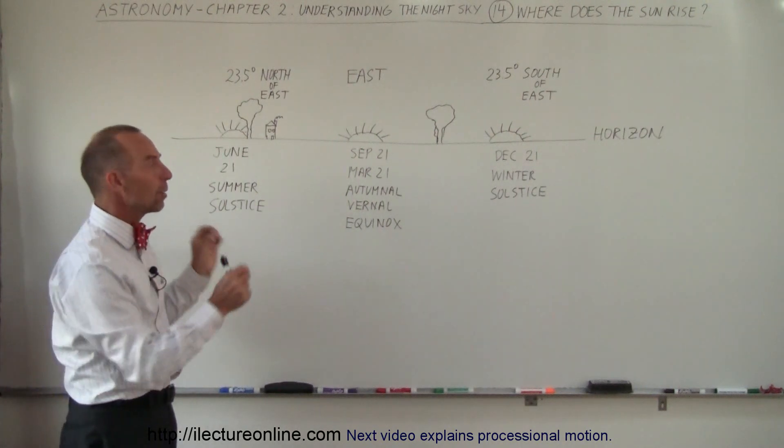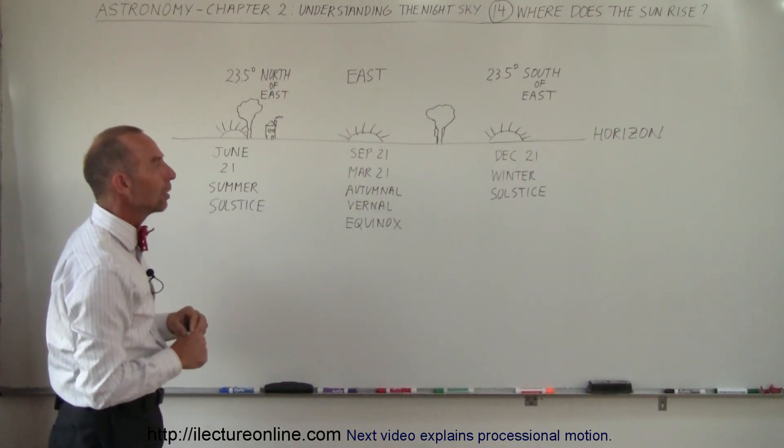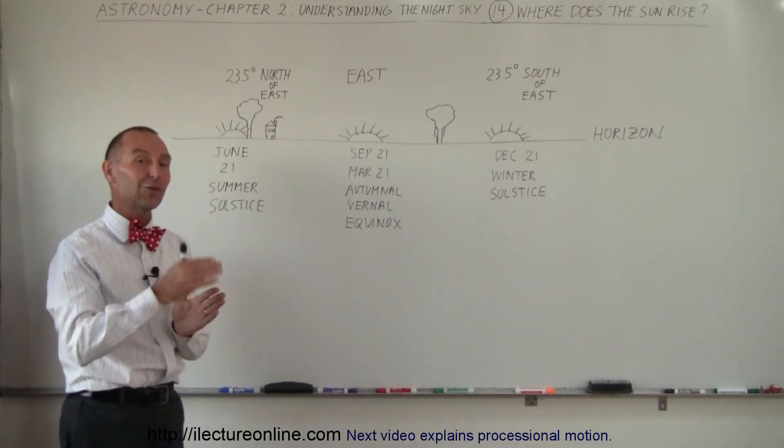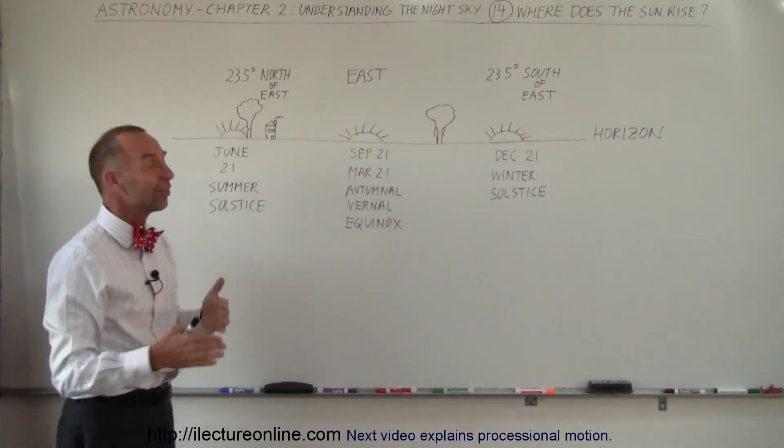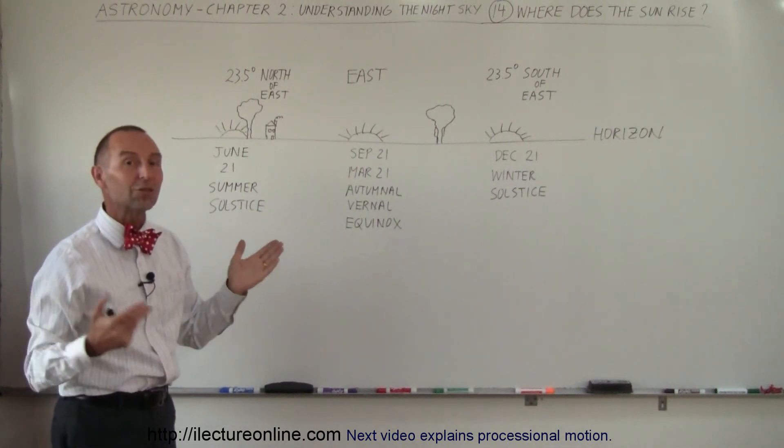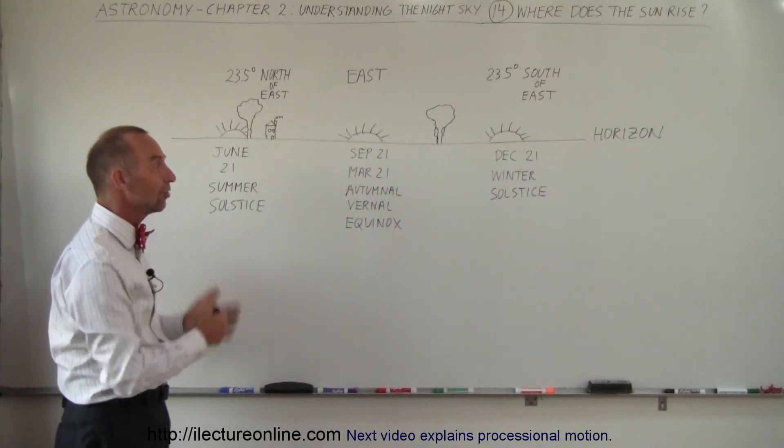They knew what was going to happen based upon where the sun rises on the horizon. So, don't always say the sun rises in the east, sometimes it's north of east and sometimes it's south of east, depending upon what time of year. And again, this is, of course, due to the tilt of the earth, which causes the seasons.